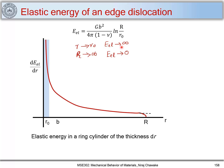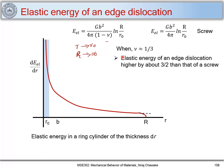Now considering a screw dislocation: when Poisson's ratio μ = 1/3 — a typical value for metals including FCC and BCC crystal structures — the elastic energy per unit length of an edge dislocation is approximately 3/2 (1.5 times) that of a screw dislocation. So edge dislocations carry more strain energy than screw dislocations for the same Burgers vector.